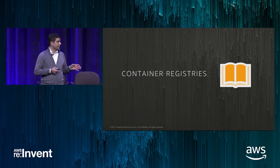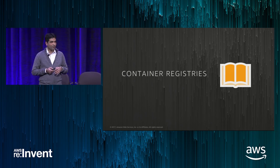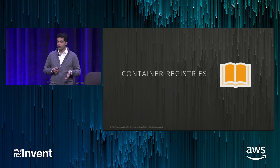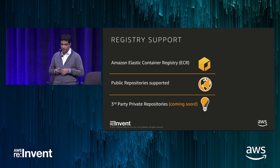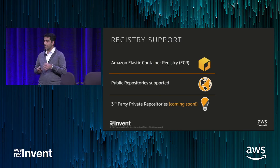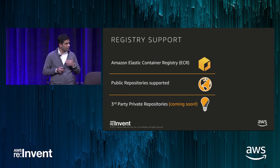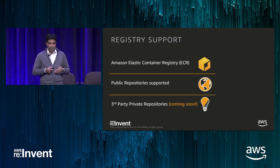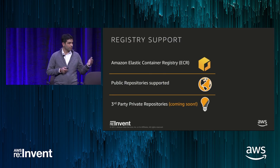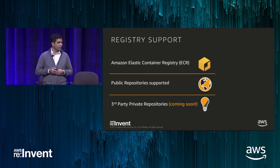You can run your containers very easily with Fargate with no infrastructure management, but where do you store the images? Amazon ECR is a fully managed, highly available registry with a global footprint. The task execution role enables us to provide seamless authentication to ECR. Similarly, if you're using a public repository like Docker Hub, you can continue to do so. From a product perspective, we are also looking at supporting third-party private repositories.